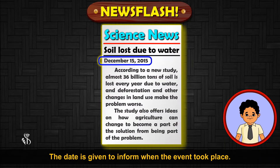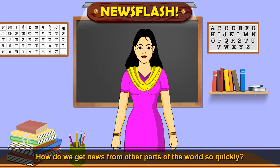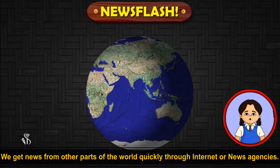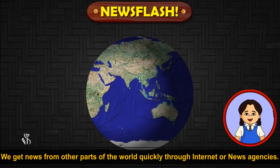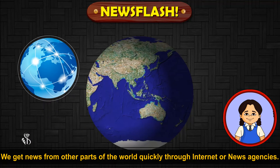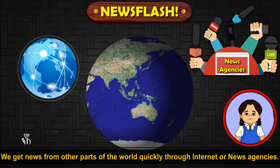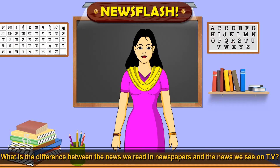Why is a date given with any news item? The date is given to inform when the event took place. How do we get news from other parts of the world so quickly? We get news from other parts of the world quickly through the internet or news agencies.